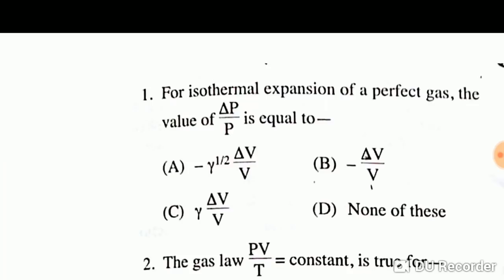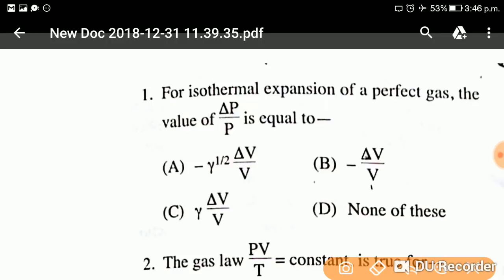Question number one: For isothermal expansion of a perfect gas, the value of delta P upon P is equal to? Read the question carefully. It is talking about the isothermal expansion of a perfect gas. The answer will be option B, that is minus delta V upon V.